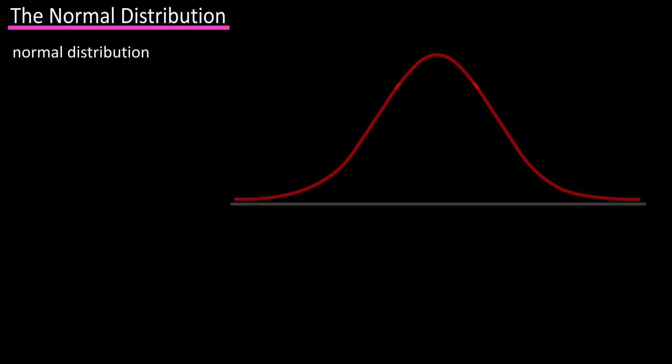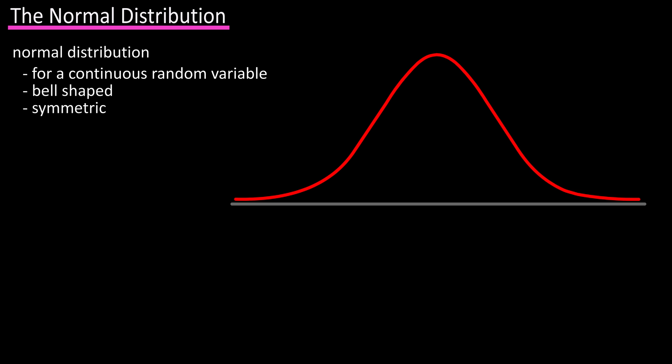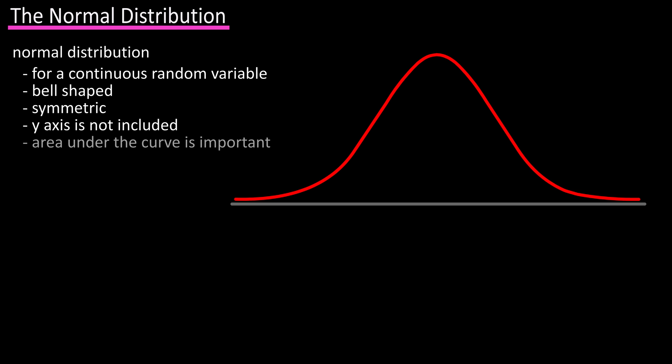A normal distribution is a probability distribution for a continuous random variable that has a bell shape and is symmetric. When it is drawn, the y-axis is rarely included, because the area under the distribution curve is used more than the values on the y-axis.